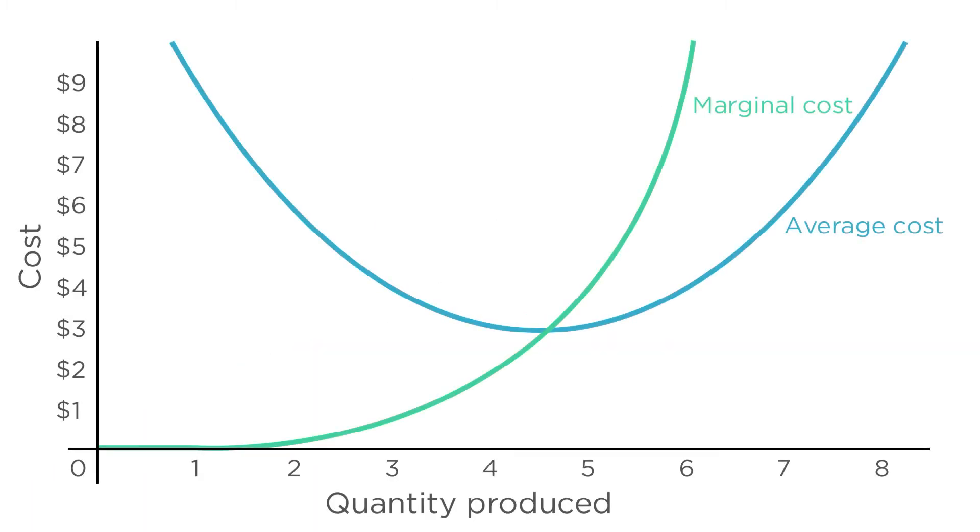But where's the marginal revenue in this graph? To know that, we need to know the price of a good. In a perfectly competitive market, this is easy. The firm can't affect the market price. So let's assume for this example that the price of the good is $9.